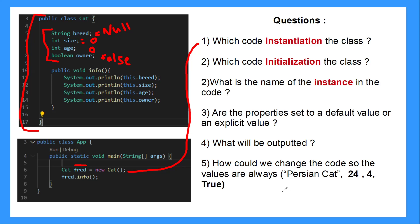How could we change the code so the values are always Persian cat, 24, 4 and true? Well, we can explicitly give that value by just putting an equals and adding that information in. And we're going to be looking at what that code looks like in the next slide.